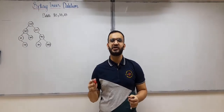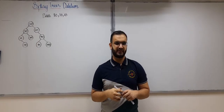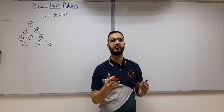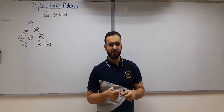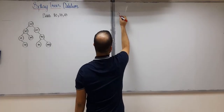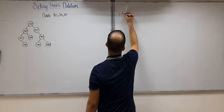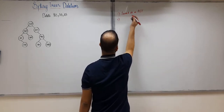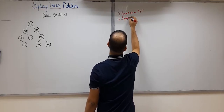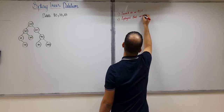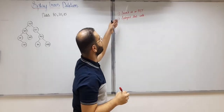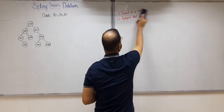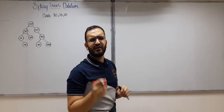In this video, let us learn deletion in splay trees. How do we perform deletion in splay trees? Until now, if you have seen my previous videos, you would know how to do insertion in splay trees and how to perform search operation in splay trees. In both those cases, we saw that to perform the operation — for example, the search operation — we searched for an element as we do in BST, and then we splayed that node. There is a very small twist when we talk about delete operation.